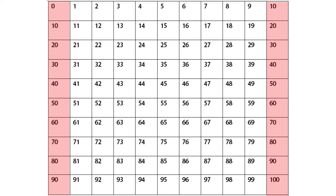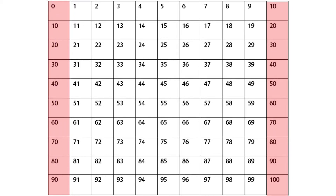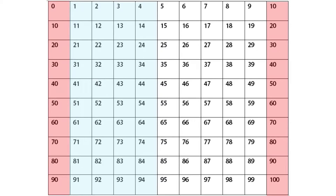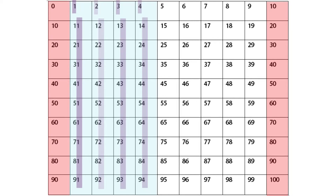These two red columns on the far right and left are multiples of ten. They're possible answers when rounding to the nearest ten. They all have a zero in the ones place. The left side of the chart, as indicated by the blue, are numbers that round to the smaller multiple of ten, because they're closer to that multiple of ten than the other. They have a one, two, three, or four in the ones place.